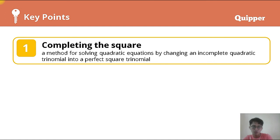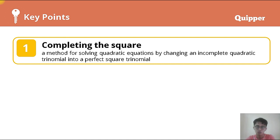As a summary, completing the square is a method for solving quadratic equations by changing an incomplete quadratic trinomial into a perfect square trinomial. This is a very useful tool in solving quadratic equations. We are done with factoring and completing the square — the next method will be the quadratic formula.